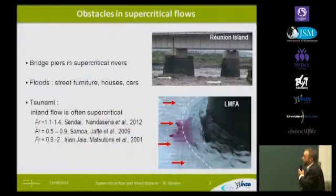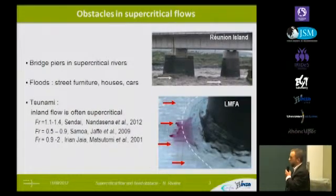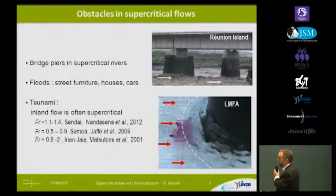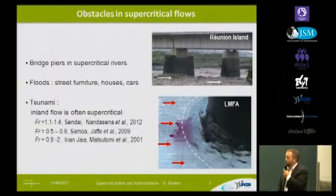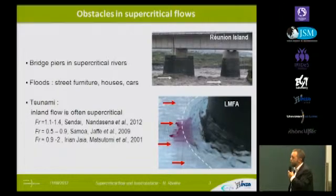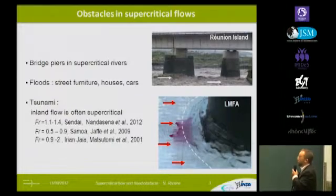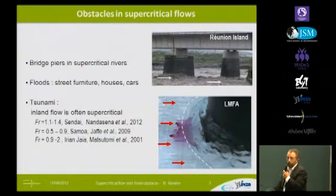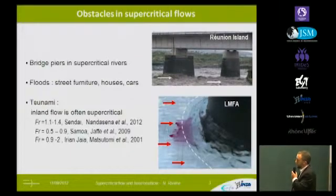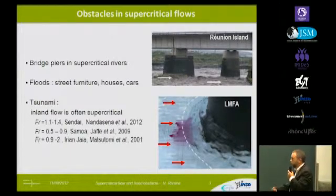What can be the obstacles we consider? For us it was first bridge piers in supercritical rivers — steep rivers as we can find them in Chile, or in Réunion Island in the Indian Ocean. It can be street furniture, houses, cars, buildings — just as we have seen some examples before in floods and also in tsunamis.